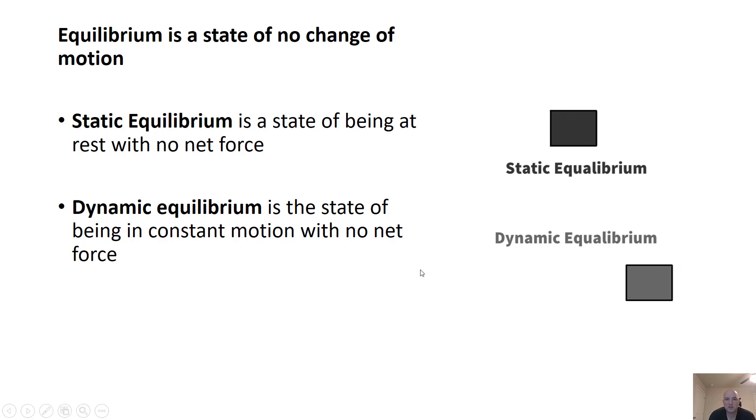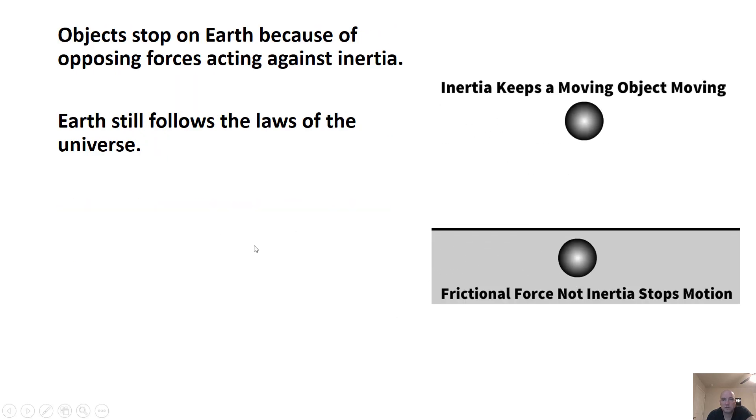Whereas dynamic equilibrium is where an object's moving. The closest example on Earth is ice—you can slide pretty far on ice because a lot of friction is gone. Now, it's not perfect. But dynamic equilibrium, you can see in space with meteors and asteroids flying through space. They don't need any extra power to keep going because they're already moving.